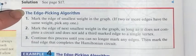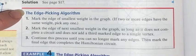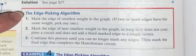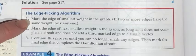So the edge-picking algorithm. We're still trying to find a Hamiltonian circuit. We're still trying to use all the vertices. We're not using all the edges, just all the vertices. So here's what you do.